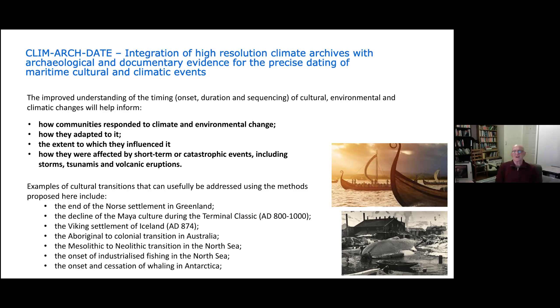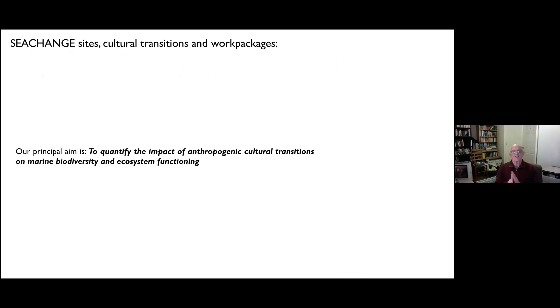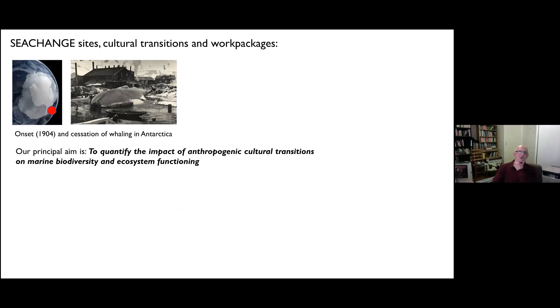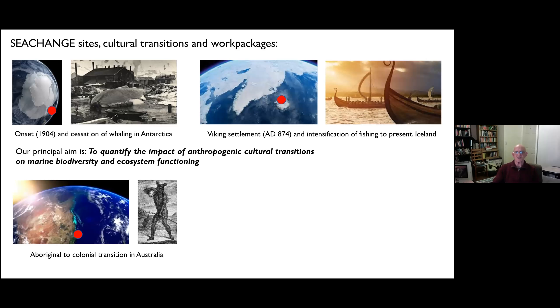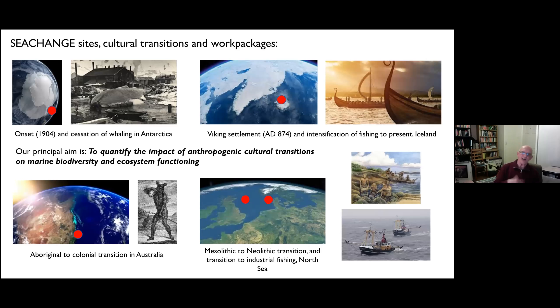We can look at how communities have responded to environmental change, how they're attracted to it, whether they influence it, and how they're affected by short-term catastrophic events. We've got a new project now, Sea Change, about cultural transitions in marine environments and their relationship to climate, marine biodiversity and ecosystem function. We're looking specifically at the cessation of whaling in Antarctica, the Viking settlement of Iceland in 874, the Aboriginal to colonial transition in Australia, and the Mesolithic to Neolithic transition and industrial fishing in the North Sea — and how these changes might have affected marine ecosystems.